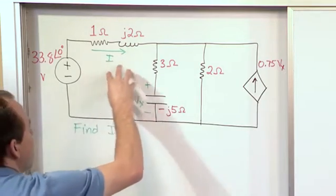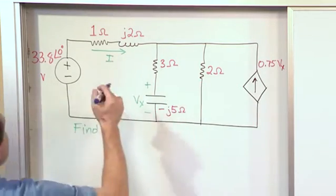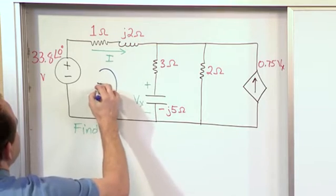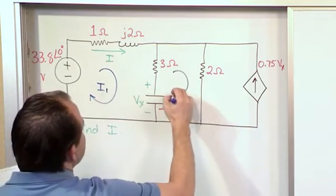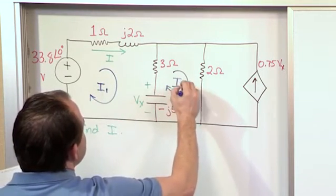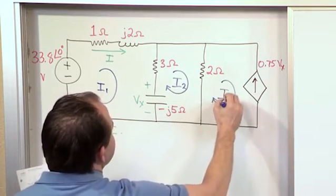So here we have three meshes. Here's one, here's one, and here's one. So let's go ahead and write our reference mesh current direction. So this will be I sub 1, mesh current I sub 1. This will be mesh current I sub 2. This will be mesh current I sub 3.